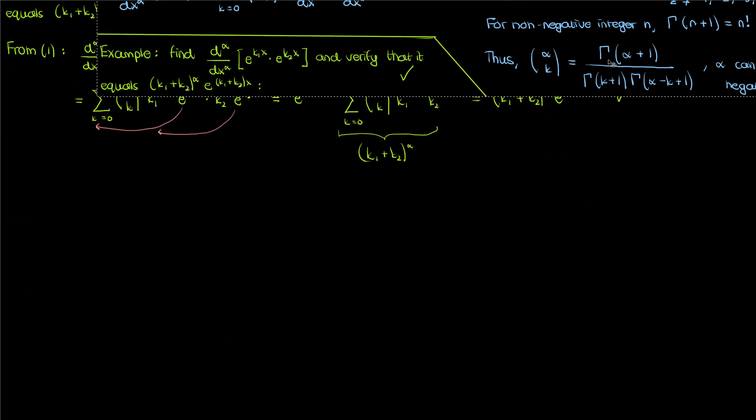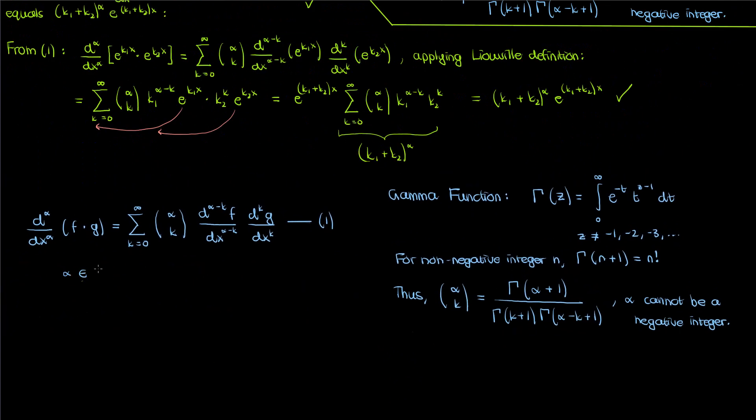Let me summarize what we've discussed. Equation 1 is the product rule for a fractional derivative, along with the meaning of the alpha choose k combination expressed using the gamma function. Note that alpha cannot be a negative integer because the gamma function is undefined at those points.